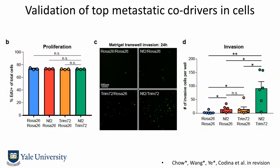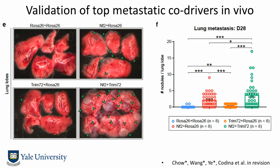With the double knockout in hand, we did a proliferation assay and saw this is not due to in vitro cell growth by BrdU, but the cells become more aggressive — transwell assays show these cells migrate more aggressively to other wells. The double mutant outperforms the single mutant. When put into animals, the cell line is not metastatic when you cut ROSA26 twice. Cutting NF2 gives quite a few metastases, cutting CHIM72 gives some, and cutting both gives a lot. We quantified these and validated in vivo that these are co-drivers of metastasis.